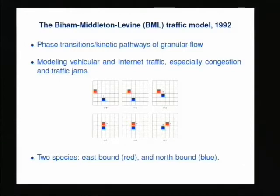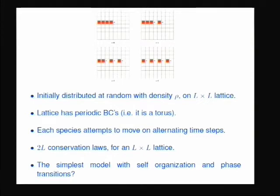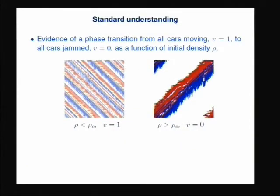We sprinkle the cars down at random and let the dynamics run. In a 1D system, there's a line of red cars moving to the right — they end up getting spaced every other one, because you move as long as the site you wish to occupy is empty. So the 1D problem is pretty trivial: as long as the density is less than one half, all the cars manage to space out every other car and move with unit velocity at each time step. As density gets greater than a half, some cars get jammed together, and that jam propagates backwards.